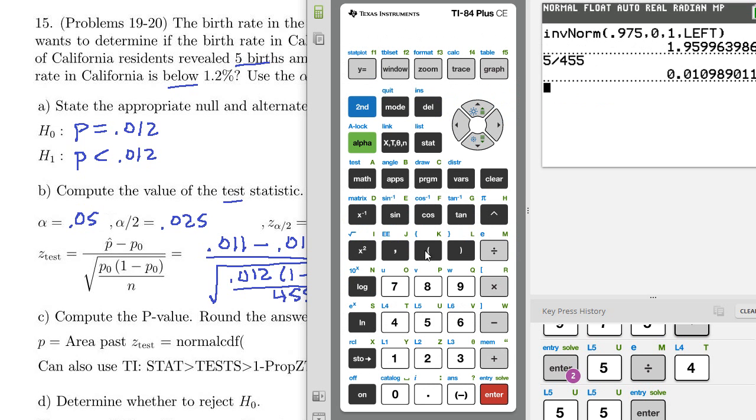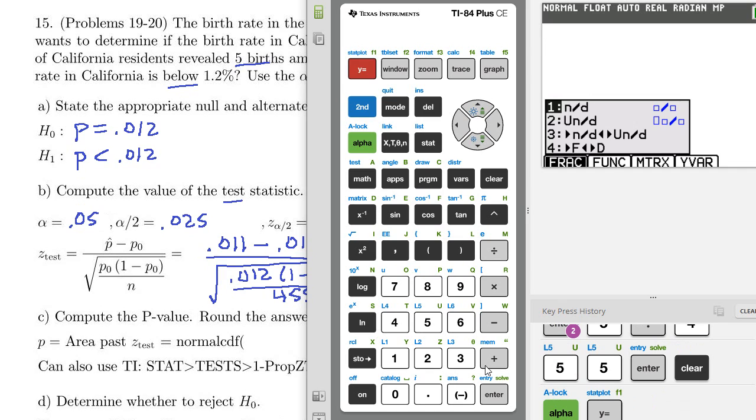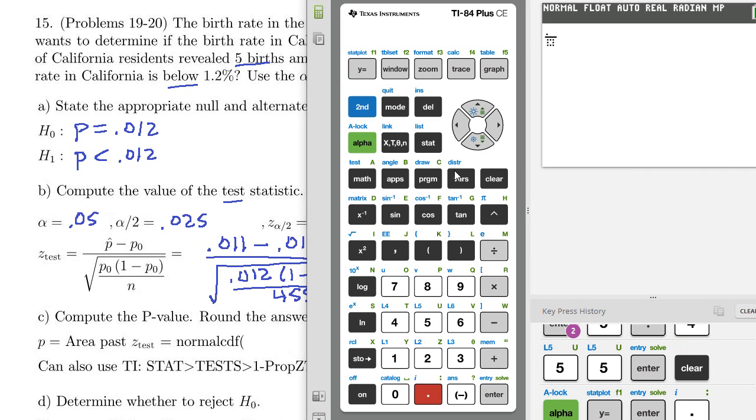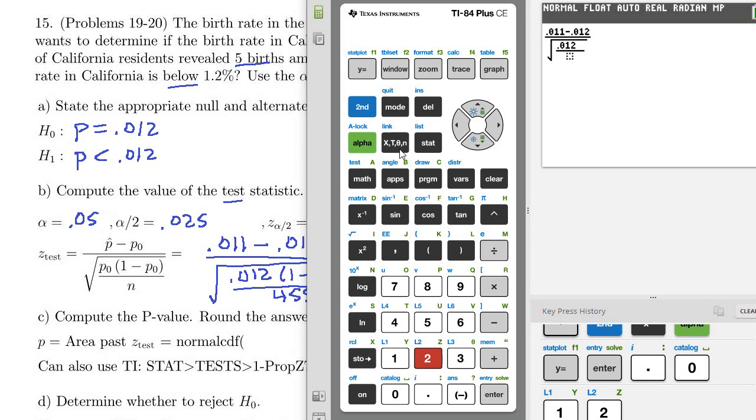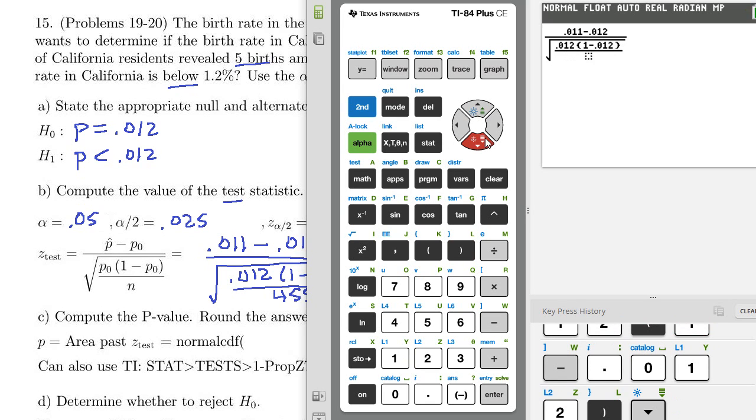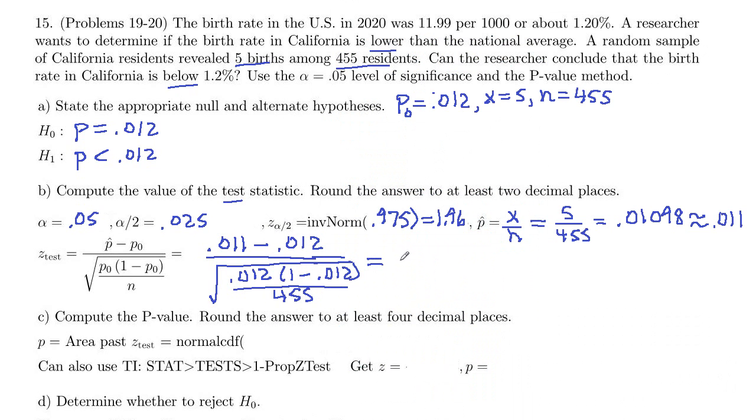So let's compute that. I'm going to do alpha y equal enter to get a horizontal fraction, 0.011 minus 0.012. Come down to the bottom, we need a square root. I'm going to do another horizontal fraction, 0.012 in parentheses, 1 minus 0.012, close parentheses, and 455 in the denominator. So negative 0.195, so it would be negative 0.20 if you round to two decimal places.